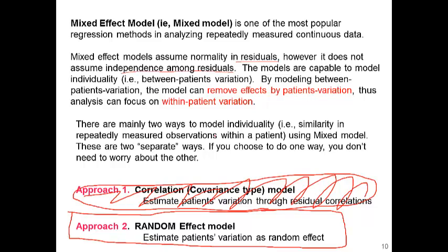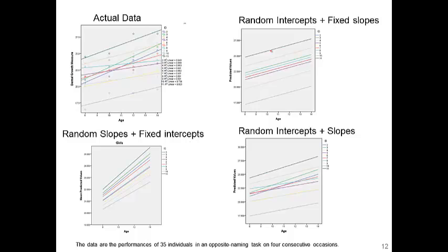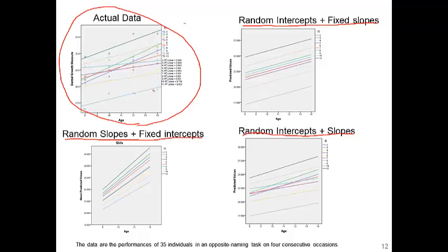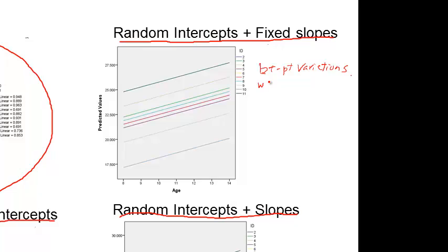We need a way to spend fewer degrees of freedom — fewer parameters — while maximizing the fit of the model to the data. We want to introduce between-patient variation in the analysis so we can remove that effect and focus on what happens within the patient. I'm introducing three different approaches to model between-patient variation without spending too many parameters. For each girl we are fitting a straight slope, giving 10 different slopes, and we want to simplify this to capture between-patient variation efficiently.